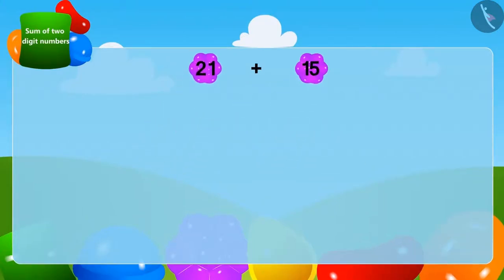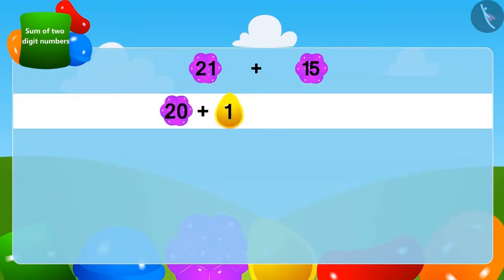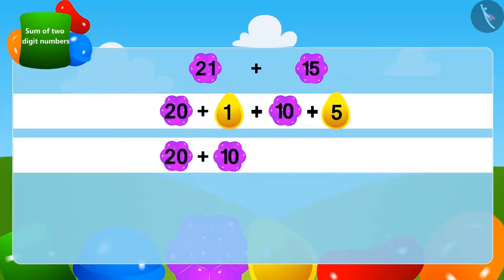We can write 21 by adding 1 and 20 like this. And in the same way, 15 can be written by adding 5 and 10. Now, we will write two-digit numbers together and one-digit numbers together like this.